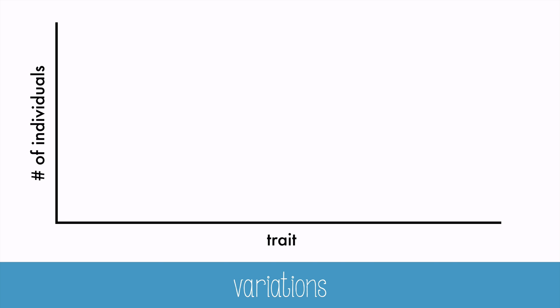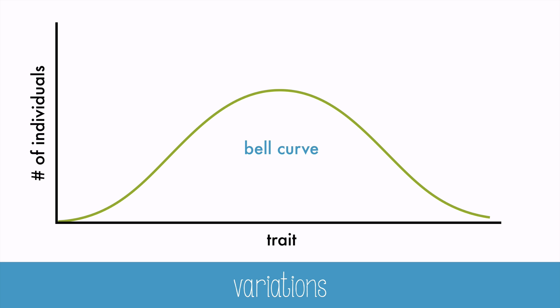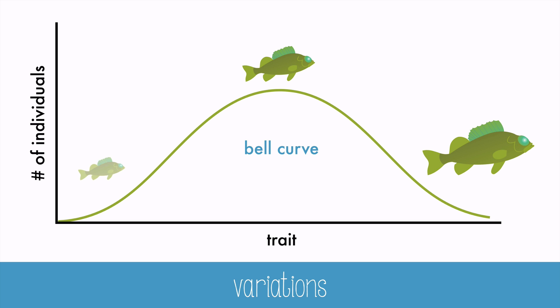Any population will have variations among the individuals. Often, when you plot the trait and the number of individuals, you get a shape called a bell curve or a normal curve. This shape indicates that the average traits are the most common, and the extremes are less common.